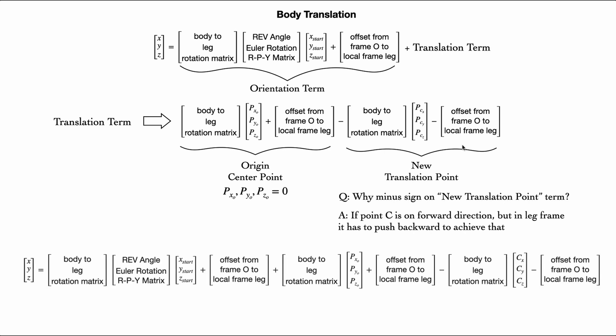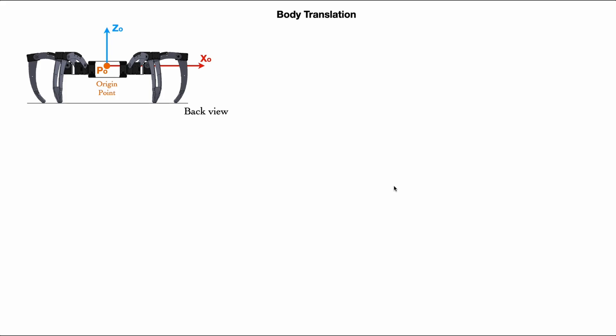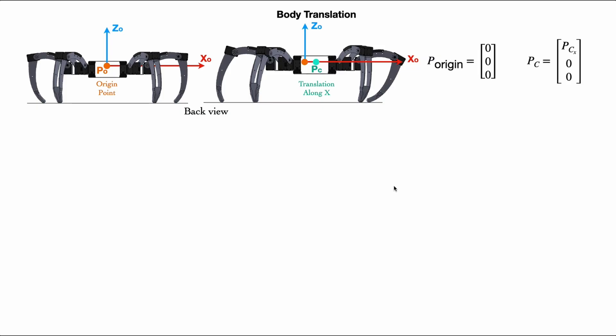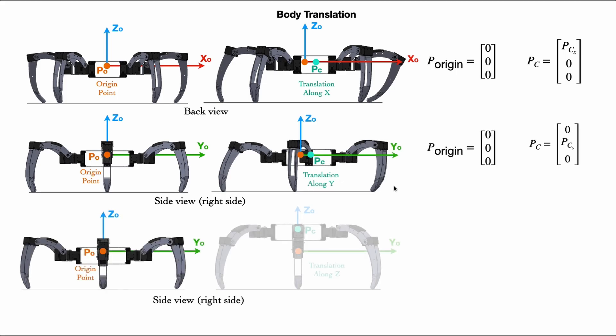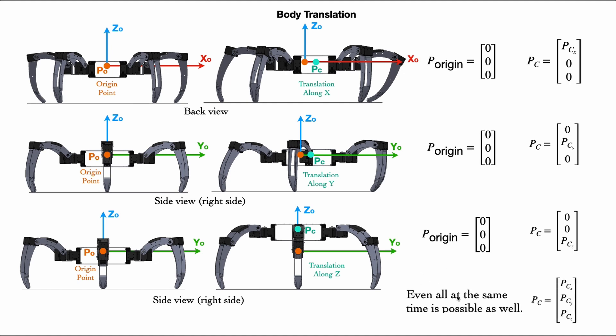Then put the translation term back to the equation. We will get the full orientation plus translation of body control for new XYZ point of the leg tip. Here at the back view of robot, if it's trying to translate along XO axis, the new point would be PCX and P origin is always zero. At side view, if it's translating along YO axis, the new point will be PCY. And if it's translating along ZO axis, the new point will be PCZ. Or it can even move in arbitrary space with PCX, PCY and PCZ at the same time.